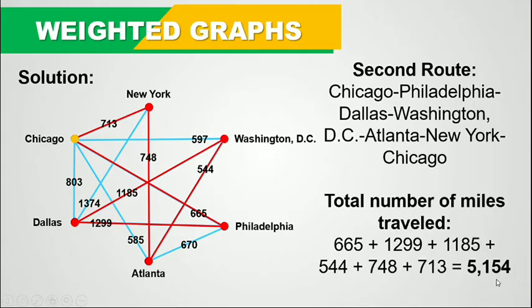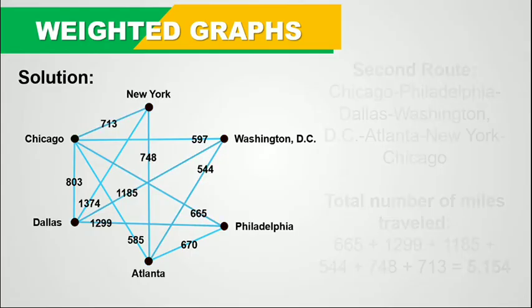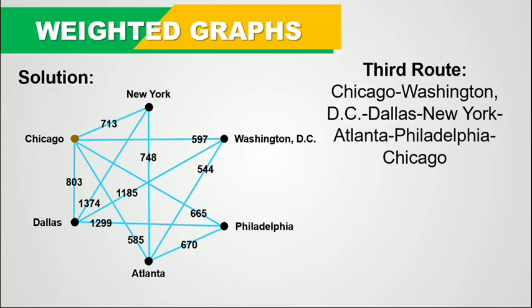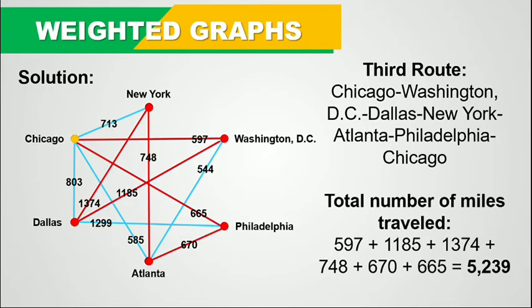For Road 3, we go from Chicago to Washington DC, then to Dallas, then to New York, then to Atlanta, then to Philadelphia, and then back to Chicago. Using the same procedure of adding the corresponding weights in each edge, the total number of miles traveled is 5239.